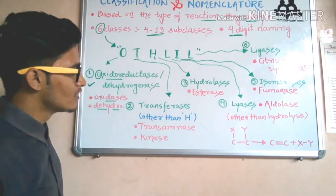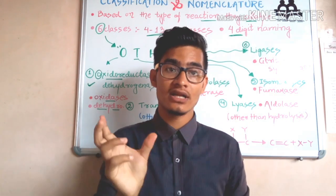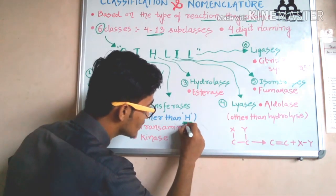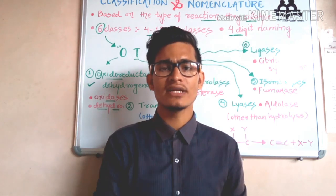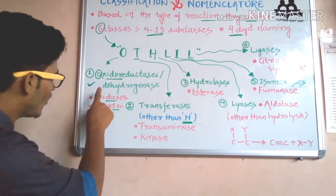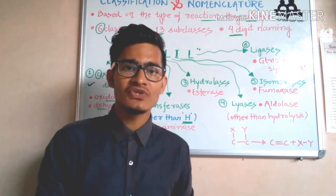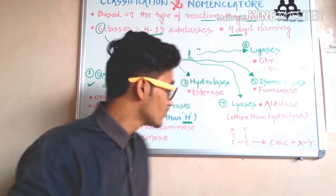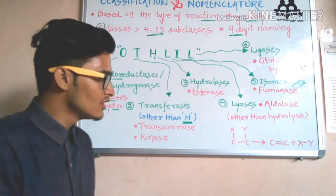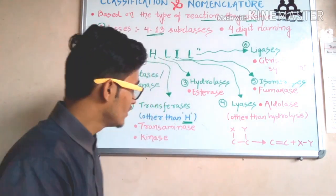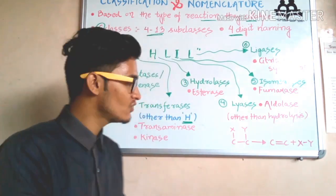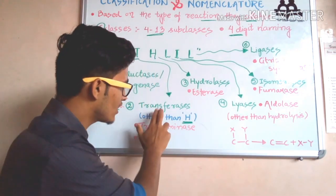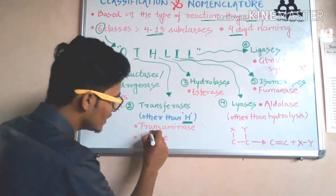Now Class 2 — T simply means transferases. From the name itself, transferase is going to transfer something. The transfer of different kinds of groups, other than hydrogen, is very important here. The reason it is other than hydrogen is that in oxidation-reduction reactions, we are removing or transferring hydrogen, so hydrogen transfer belongs to Class 1. Any group transfer other than hydrogen comes under Class 2 — transferases.